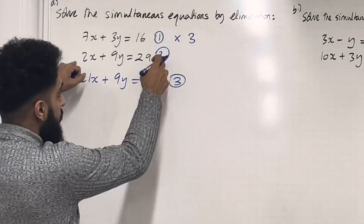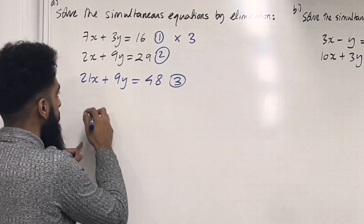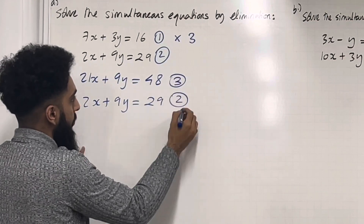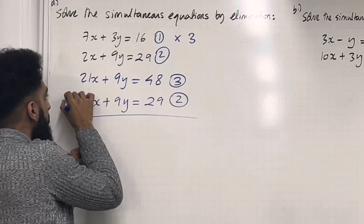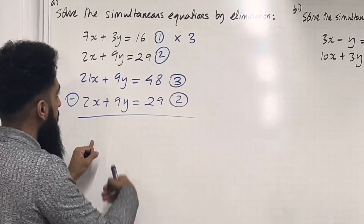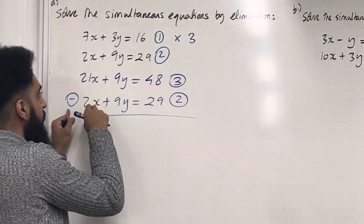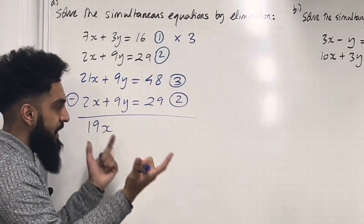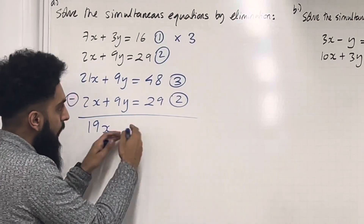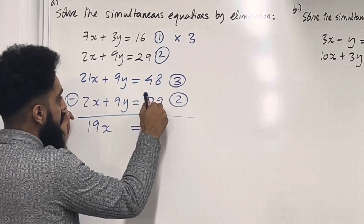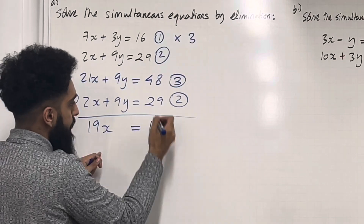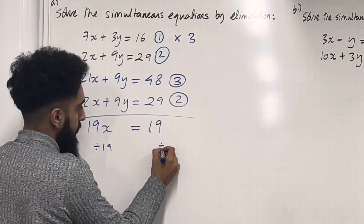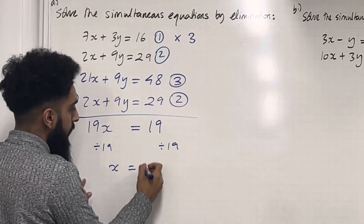Now I'm going to put equation 2 underneath equation 3. So I've got 2x plus 9y is equal to 29 — that's equation 2. If I subtract the two equations, that will eliminate the y. So 21x take away 2x is 19x; 9y take away 9y is 0; equal 48 take away 29 is 19. So now I can divide both sides by 19, which gives me x equal 1.